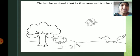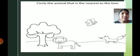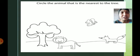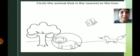Circle the animal that is nearest to the tree. Here, one tree and some animals are given — one lion, one fox, and a butterfly. Which animal is nearest to the tree? The lion is nearest to the tree. Fox is far from the tree. The distance from the tree to the lion is less, and the distance to the fox is more. So the lion is near and the fox is far — circle the lion.